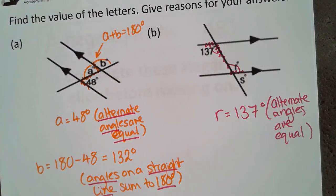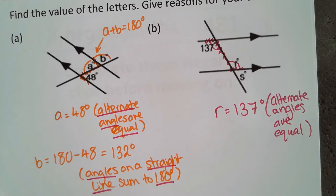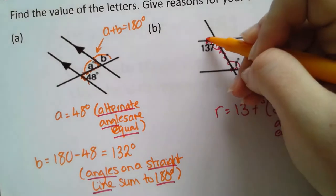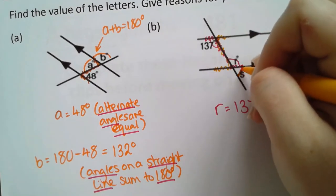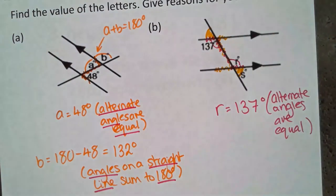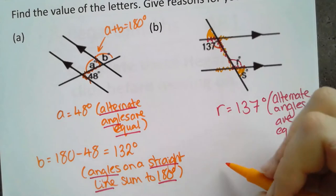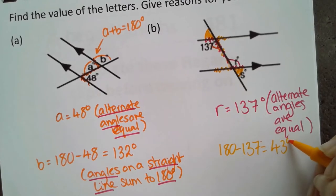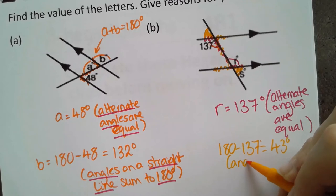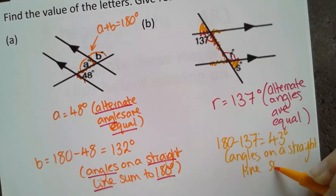We could do a very similar thing to what we did before to find s by looking at angles on a straight line. But what I'm going to suggest is that we try something a little bit different and try and use those exterior angles that we saw before. If we were to look at a z where this s is at the point, we're also looking at this angle here. So rather than this straight line, we could use this straight line over here. And so we could end up with saying 180 minus 137, which is going to give us 43 degrees. And that's because of angles on a straight line sum to 180.